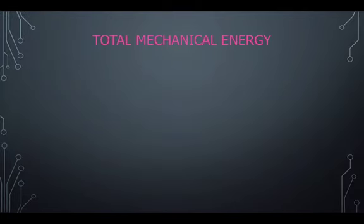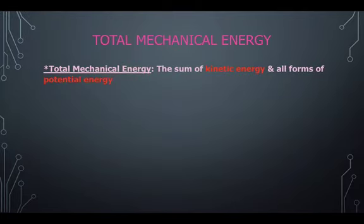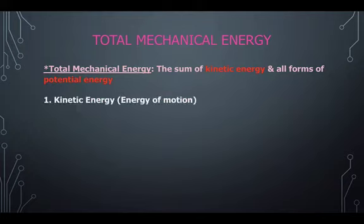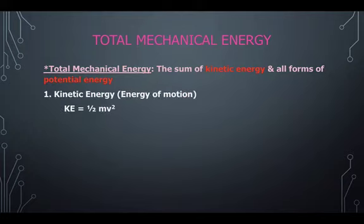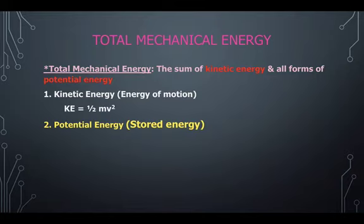So we've talked already about the total mechanical energy of an object, which is the sum of the kinetic energy in all forms of potential energy. Kinetic energy is the energy of motion, which is found by taking 1 half mv squared.